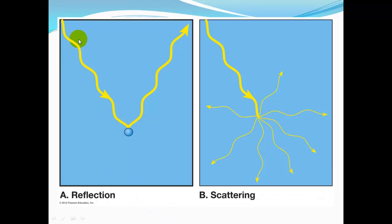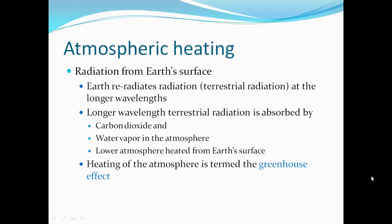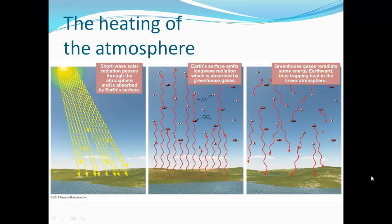Reflection occurs when a solar ray hits a water vapor molecule and bounces back at a mirror angle. Scattering is when a ray hits an atmospheric particle and splits apart. Earth re-radiates radiation as terrestrial radiation at longer wavelengths. These longer wavelengths are absorbed by carbon dioxide and water vapor in the atmosphere, causing lower atmospheric heating from Earth's surface — this is called the greenhouse effect. Both carbon dioxide and water vapor are greenhouse gases. As they warm up they re-radiate the energy, which is why the lower atmosphere tends to warm up.